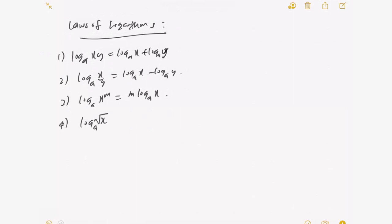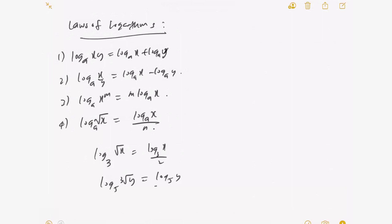The fourth rule is the root rule, which is really an extension of the power rule. For example, log base 3 of √x = (log_3 x) / 2, because square root means power 1/2. Similarly, log base 5 of ∛y = (log_5 y) / 3, because cube root means power 1/3. I find knowing this rule makes things faster.